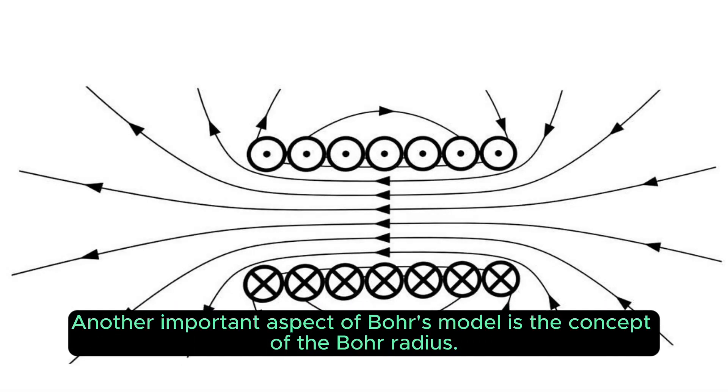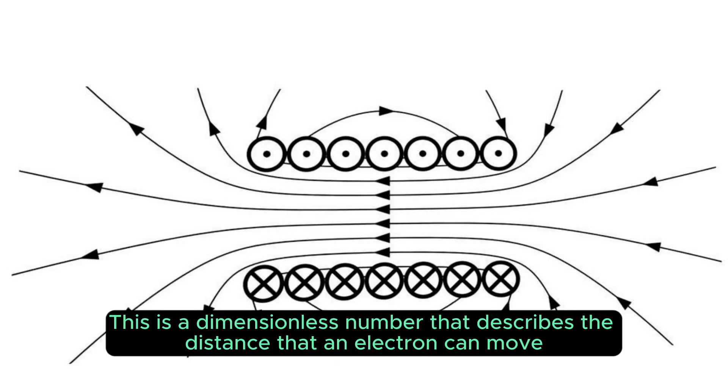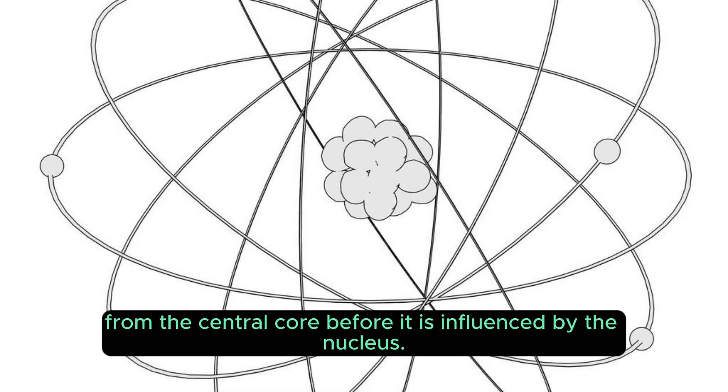Another important aspect of Bohr's model is the concept of the Bohr radius. This is a dimensionless number that describes the distance that an electron can move from the central core before it is influenced by the nucleus.